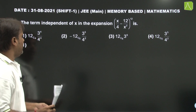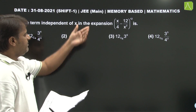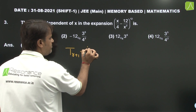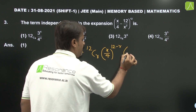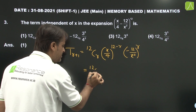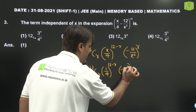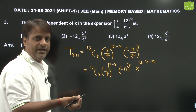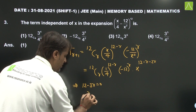Question number 3: Find the term independent of x in the expansion. Assume let r plus 1 be the term independent of x. So T(r+1) equals 12Cr times (x/4)^(1/4) to the power (12 minus r) times (minus 12 upon x squared) to the power r. Simplifying: 12Cr times (1/4)^(12 minus r) times (minus 12)^r multiplied by x to the power (12 minus r minus 2r). For x independent, power equals 0, so 12 minus 3r equals 0, giving r equals 4.